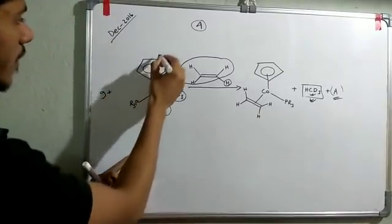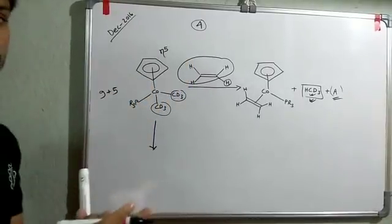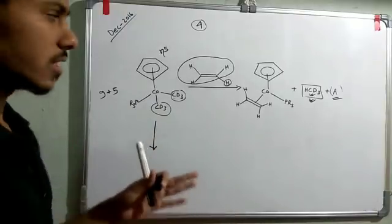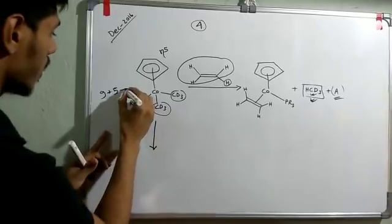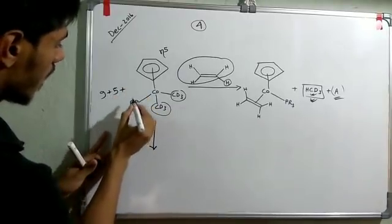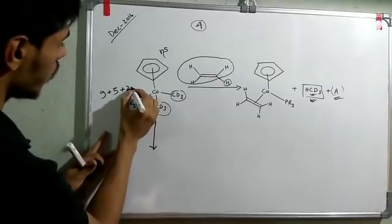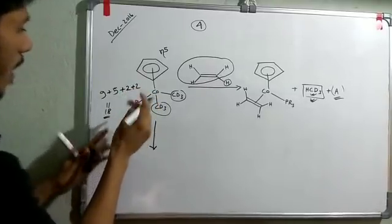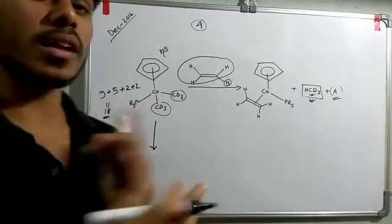Cobalt has 9 electrons. This is eta-5 complex, so eta-5 will give you 5 electrons. I am counting according to neutral atom model. Then one PR3 group will give 2 electrons and two Cd3 groups will give another 2 electrons, so overall it is 18 electrons.